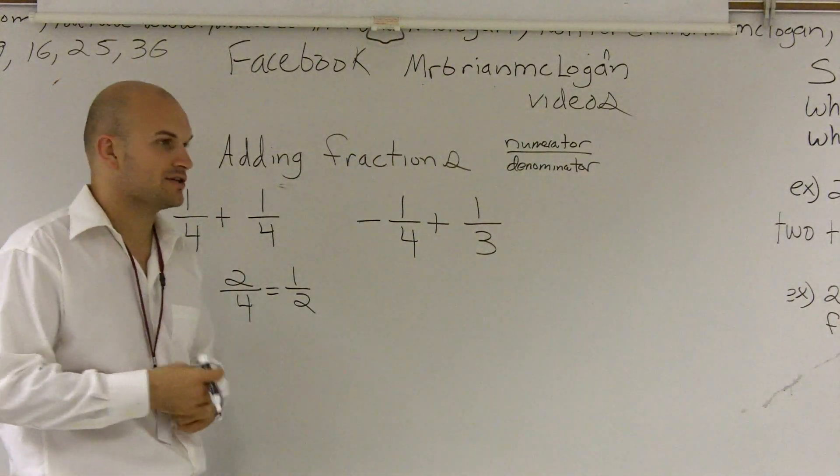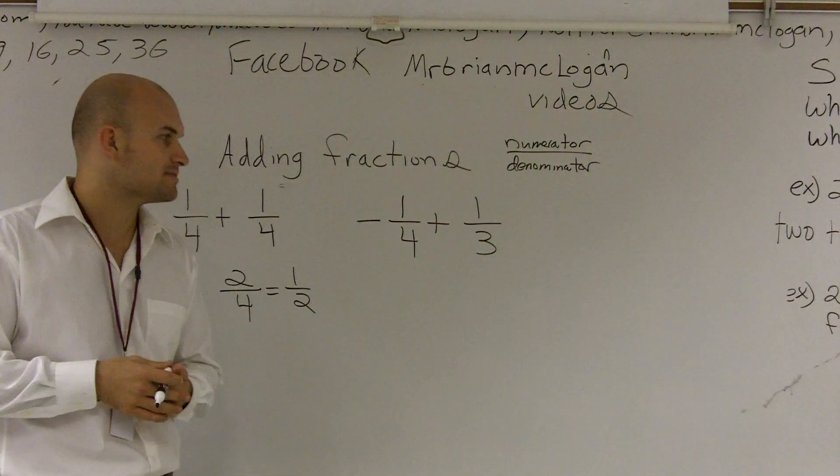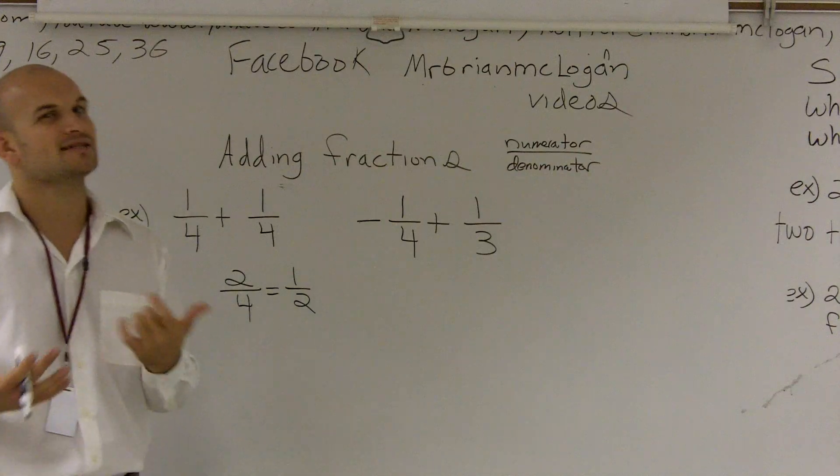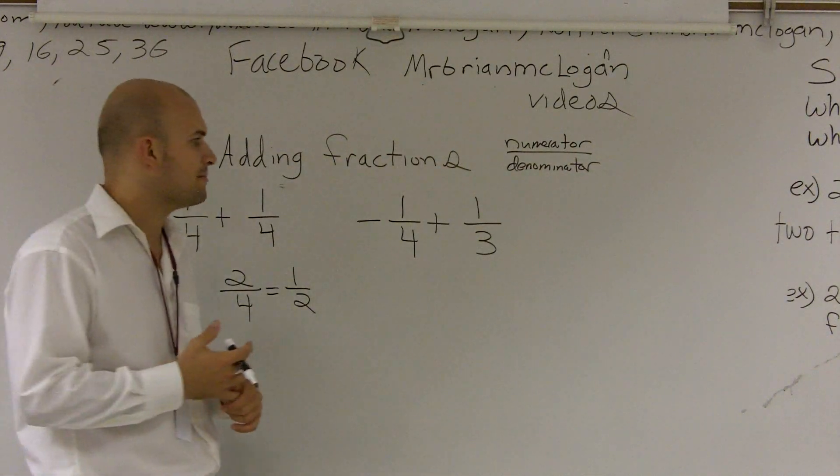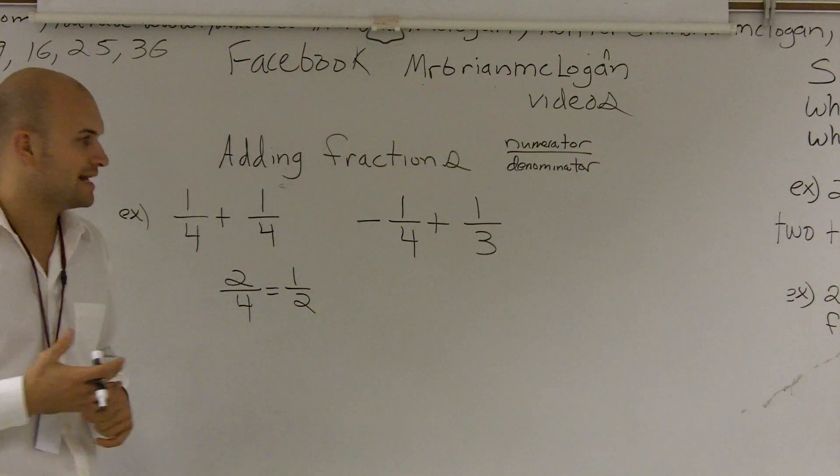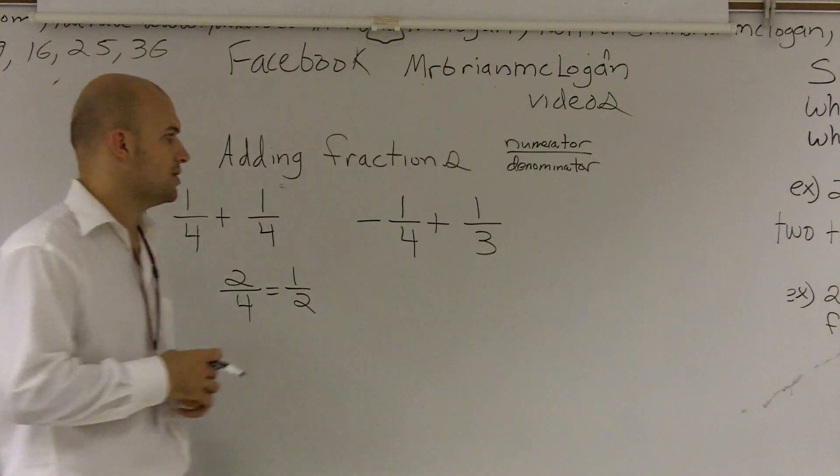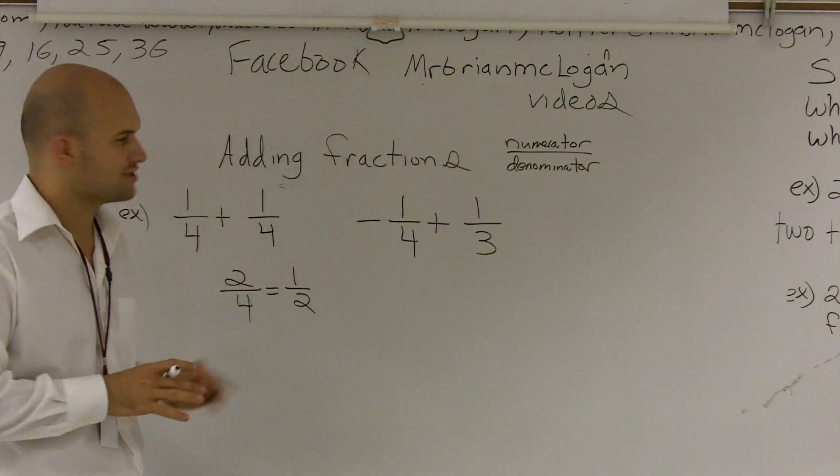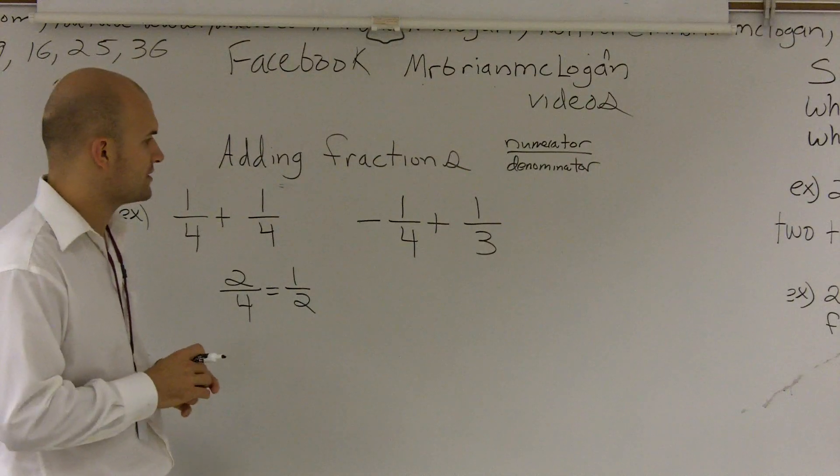We need to find the least common multiple between these two numbers so they'll have a common denominator. And the way that we can do that, there's a very easy way, which is always to multiply them together. But that doesn't always give you the least common multiple. But a lot of times, it will give you an answer that you can at least work with and then simplify later.